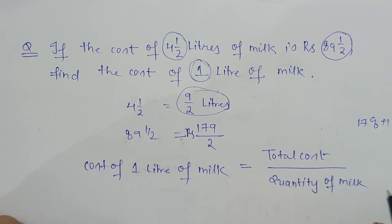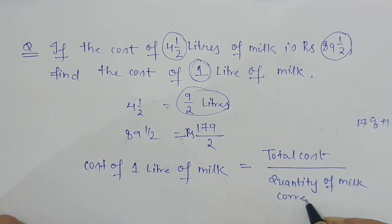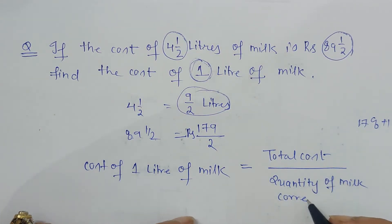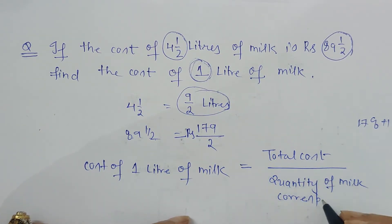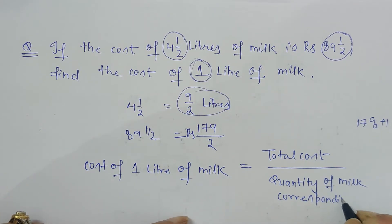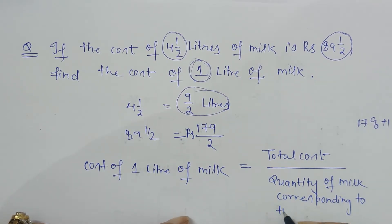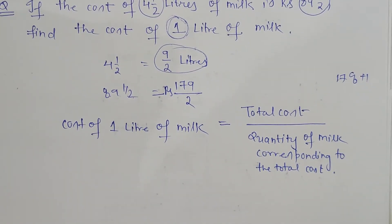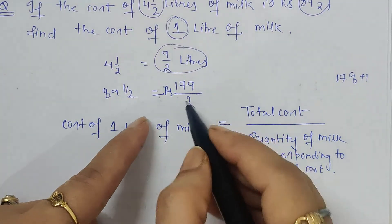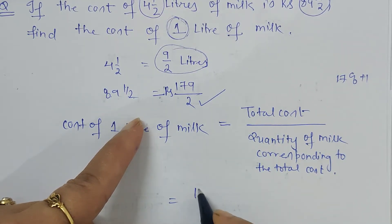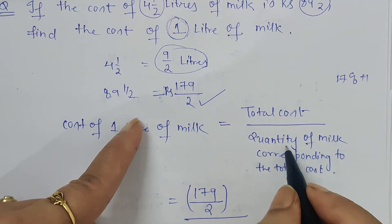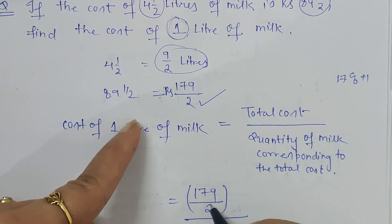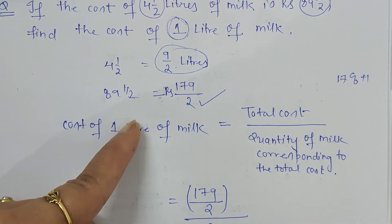Simply by putting in this formula we will get the solution. So the total cost given is 179 upon 2, and it should be divided by the quantity of milk corresponding to it, so 9 by 2 liters of milk.